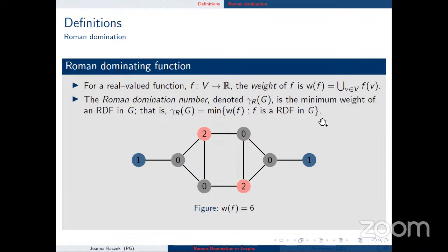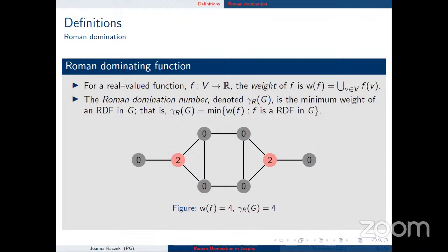The Roman domination number, denoted by the Greek letter γR, is the minimum weight of a Roman dominating function. In the example shown, the weight is 6, but can we do better? It turns out we can find a Roman dominating function with weight only 4, which is the optimal solution for this graph. So the Roman domination number equals 4 — we cannot decrease it to 3 or 2. It's a small enough graph that this is easy to verify.